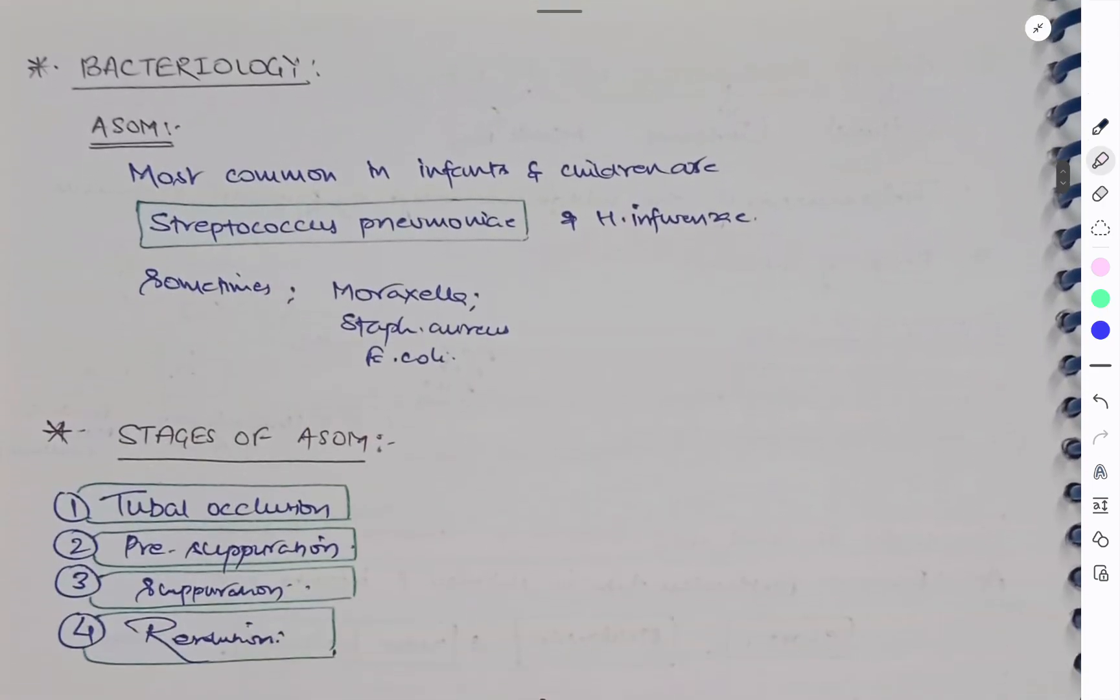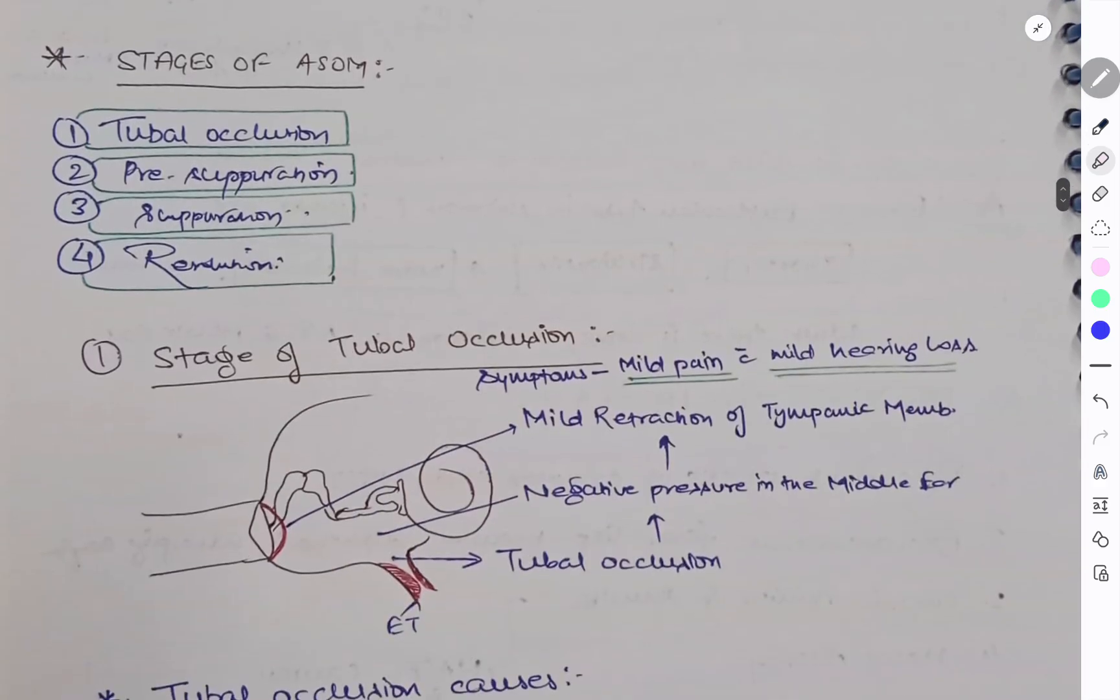So which is the most common organism affecting infants and children? Streptococcus pneumoniae and then Haemophilus influenzae. Some others are Moraxella, Staph aureus, E. coli. What are the stages of ASOM? So this is the most important part, the stages of ASOM. First one we have tubal occlusion, then pre-suppuration, suppuration, and resolution.